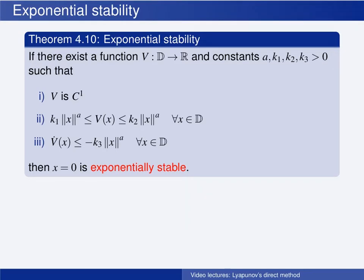These two conditions only concern the function v itself. Then comes the third condition, which is where the system equation comes into play: the time derivative of v should be less than or equal to the negative of k3 times the norm of x raised to the same constant a, and this should also be satisfied in the domain d.